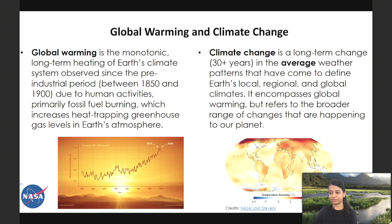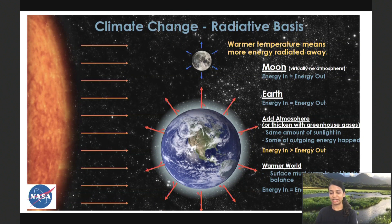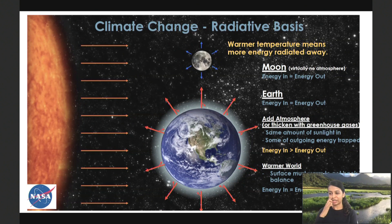Here is a brief introduction to the climate change radiative basis. The fundamental equation is that an object with warmer temperature radiates more energy away. Consider Earth, Moon, and Sun: the Moon has no atmosphere, so energy from the Sun is balanced by energy going out. On Earth, we have an atmosphere, so some energy is trapped and directed back to Earth — more energy coming in than going out — and the planet warms to reach equilibrium. This is what we call the greenhouse effect. Current research figures out where that energy goes and how Earth's systems — oceans, ice, land surface, vegetation — react to it.